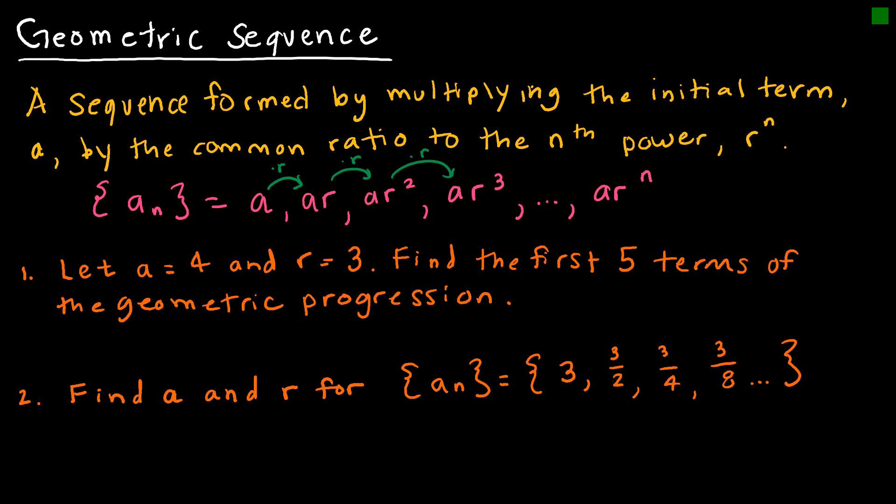If I'm just writing out the numbers, question number one says let's start at 4 and then use a ratio of 3. The common ratio of 3 means 4 times 3 is 12. And then instead of going back to 4 and taking 4 times 3 times 2, I'm just going to take 12 times 3 which is 36. And then I'm going to take 36 times 3 to get 108, and then 108 times 3 to get 324.